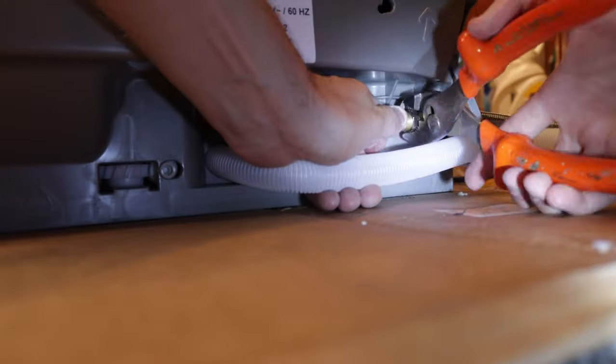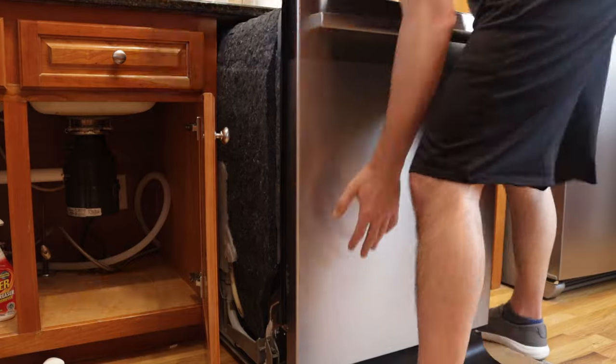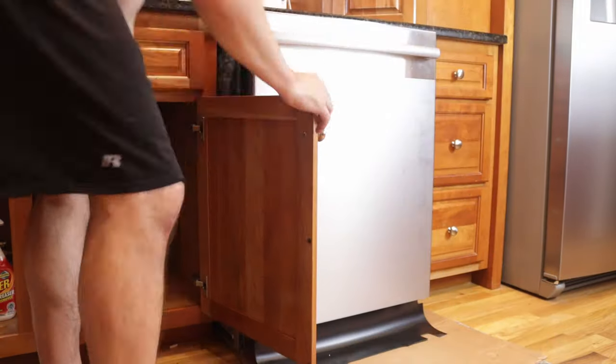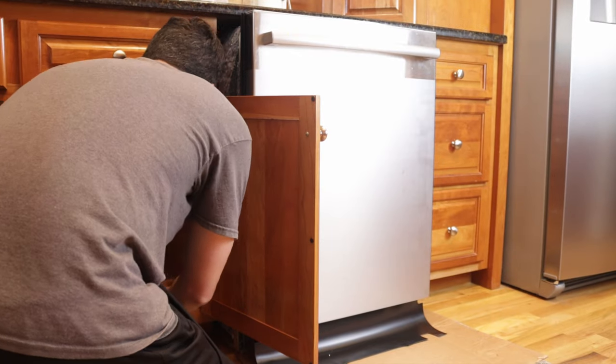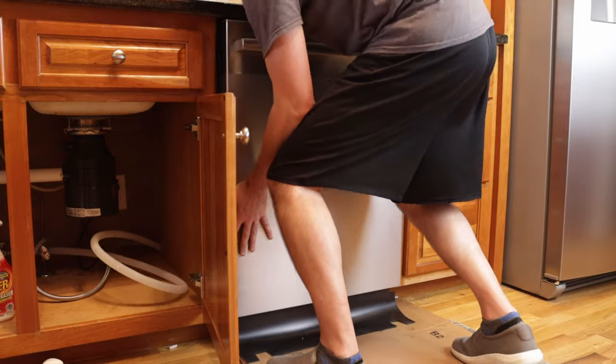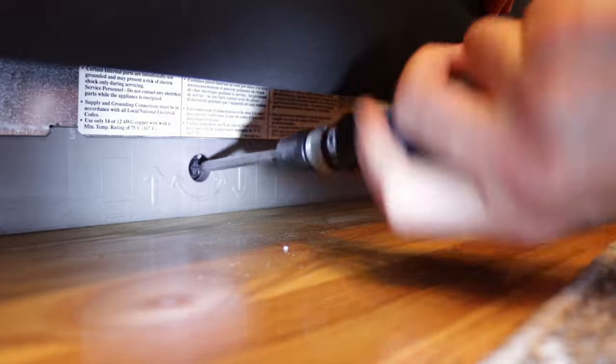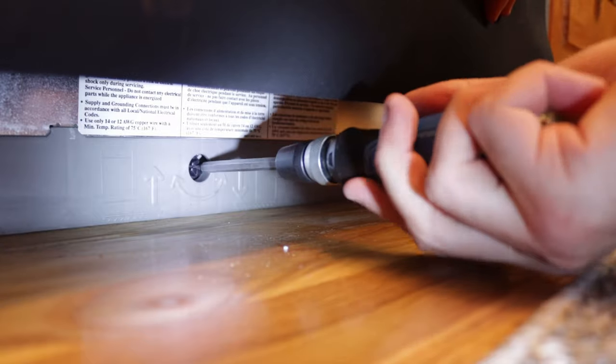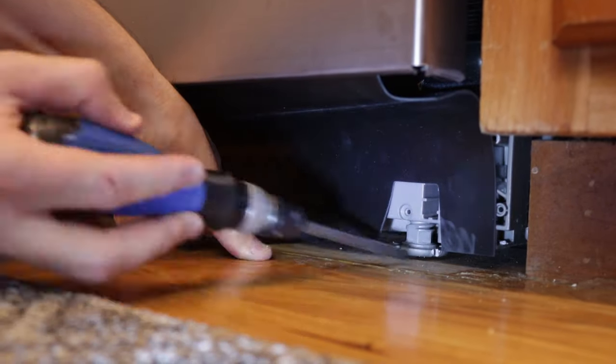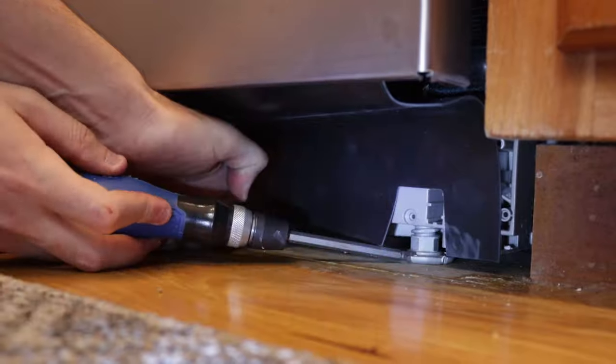This dishwasher has an adjustment in the front to raise the back end. I didn't realize that at first and I ended up having to pull it back out because I thought it had back legs, so don't make that same mistake that I did. And one other thing, when you're adjusting the front legs make sure you lift up the dishwasher and spin the legs because the weight of the dishwasher makes it hard to spin otherwise.